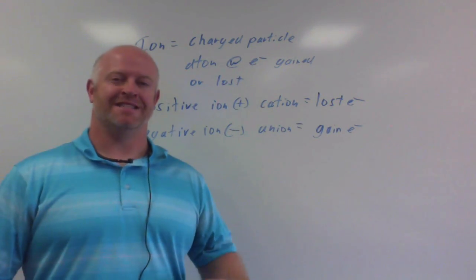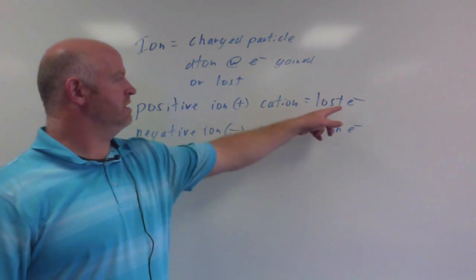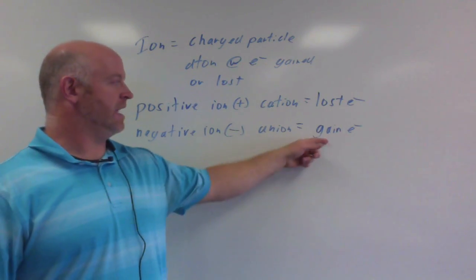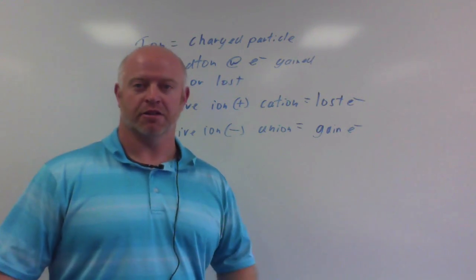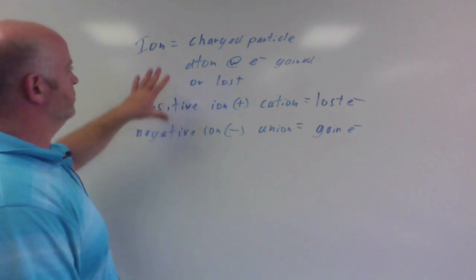Think of electrons as debt. If you lose debt, your bank account becomes more positive. If you gain debt, your bank account becomes more negative, which you'll find out real fast in college. So these are what ions are.